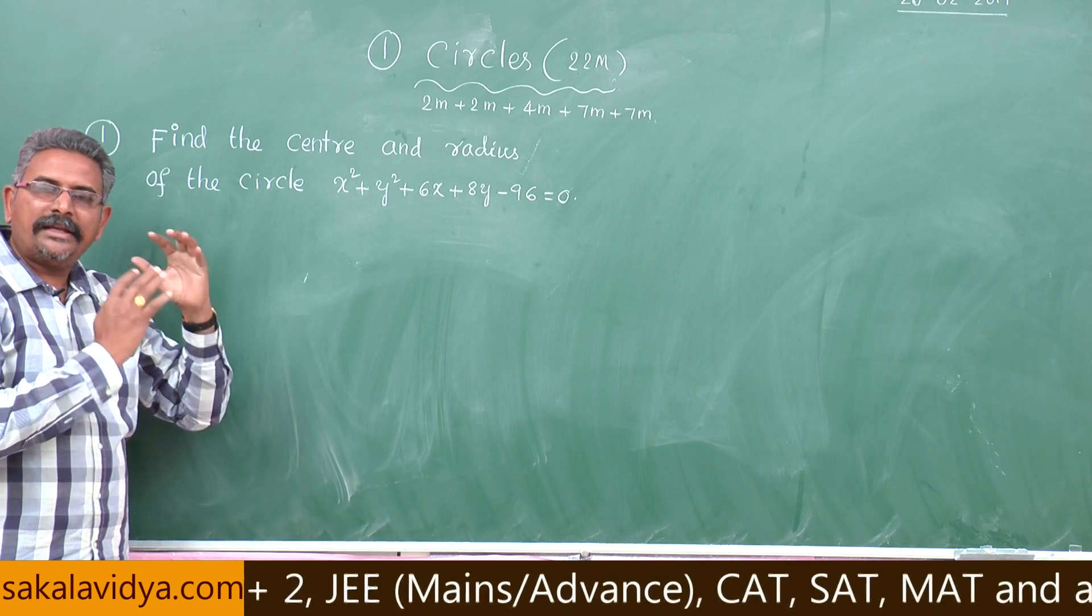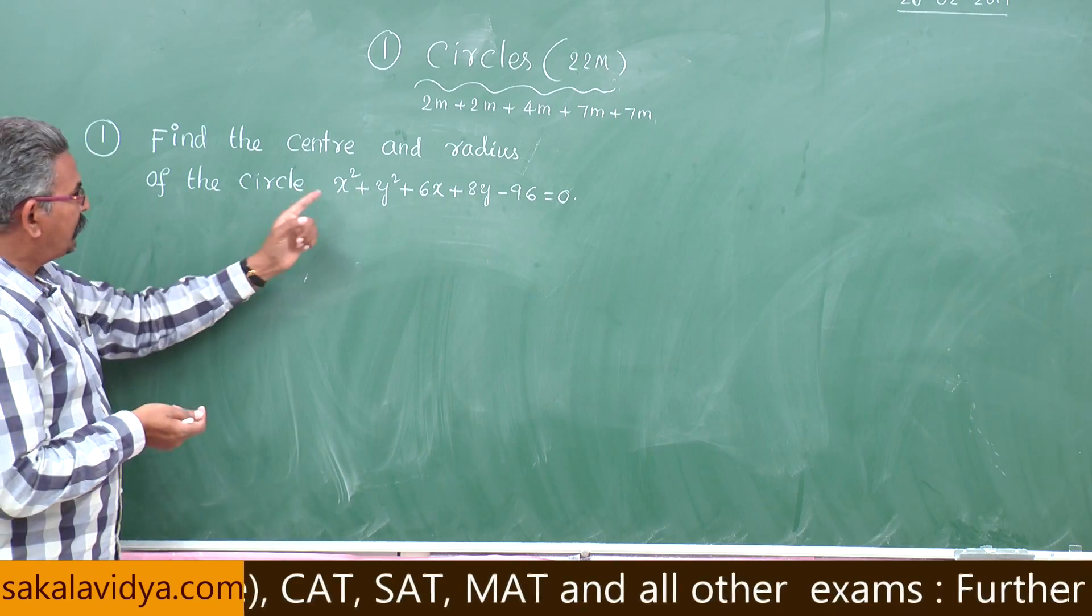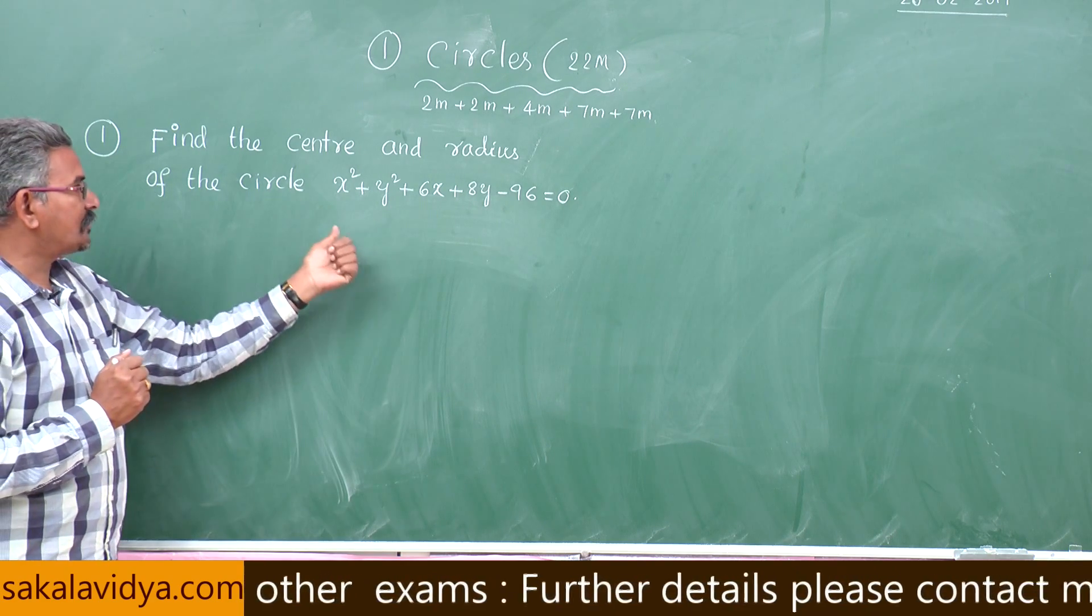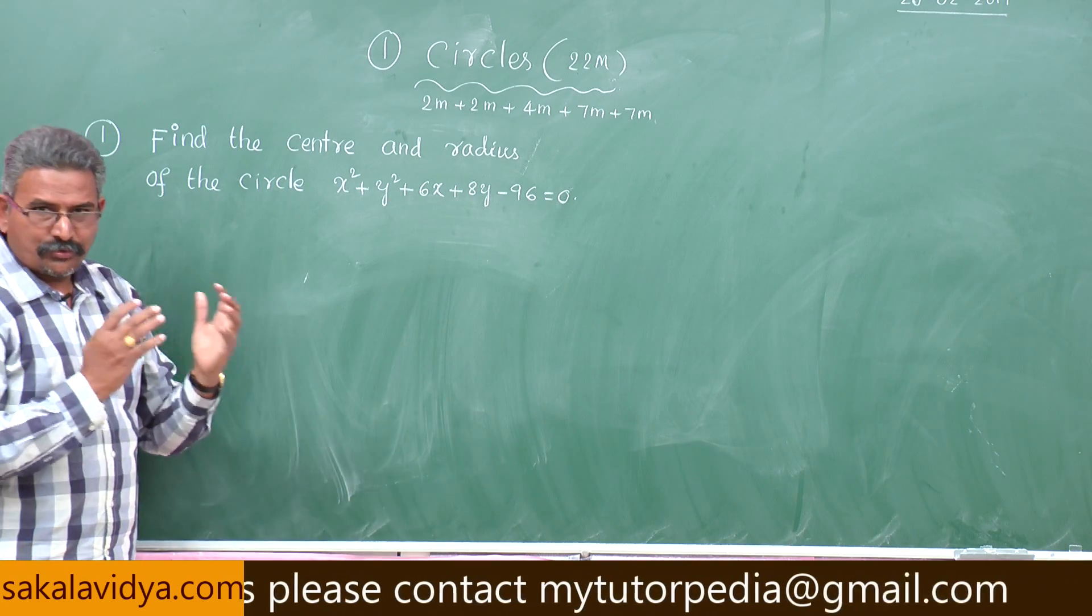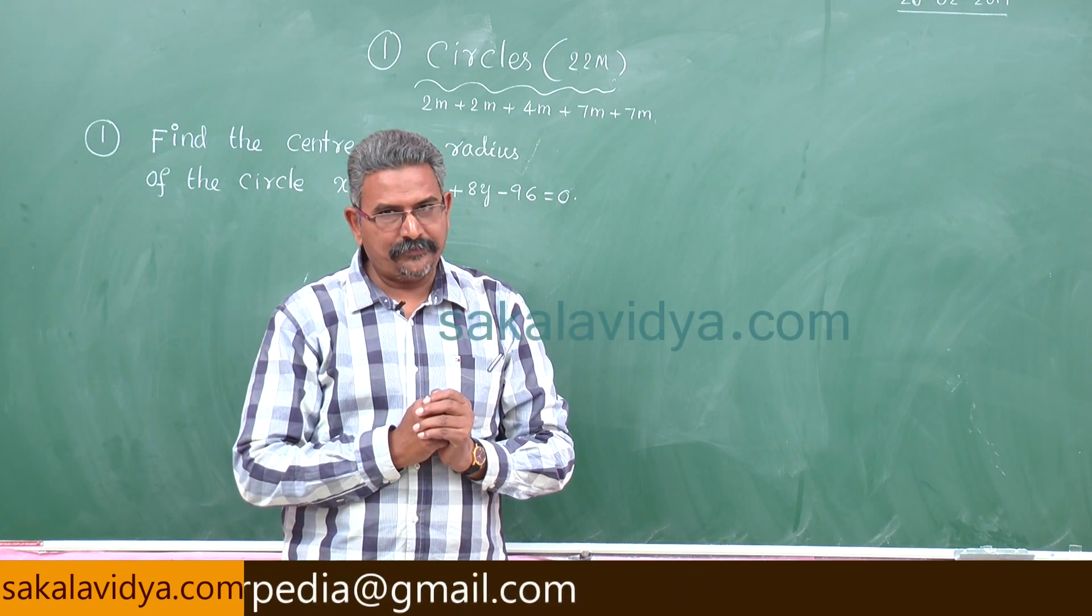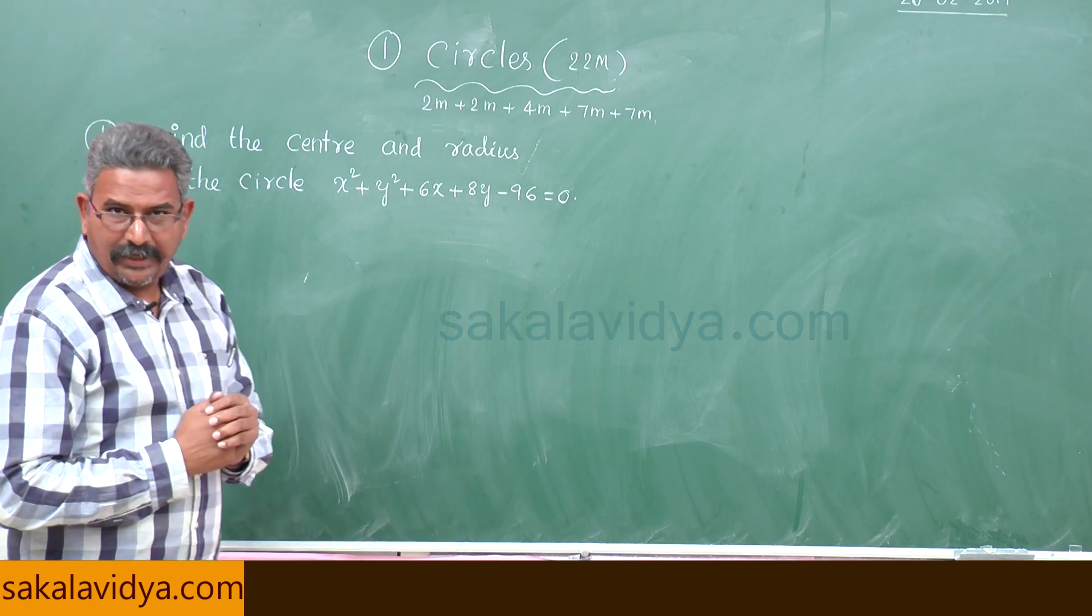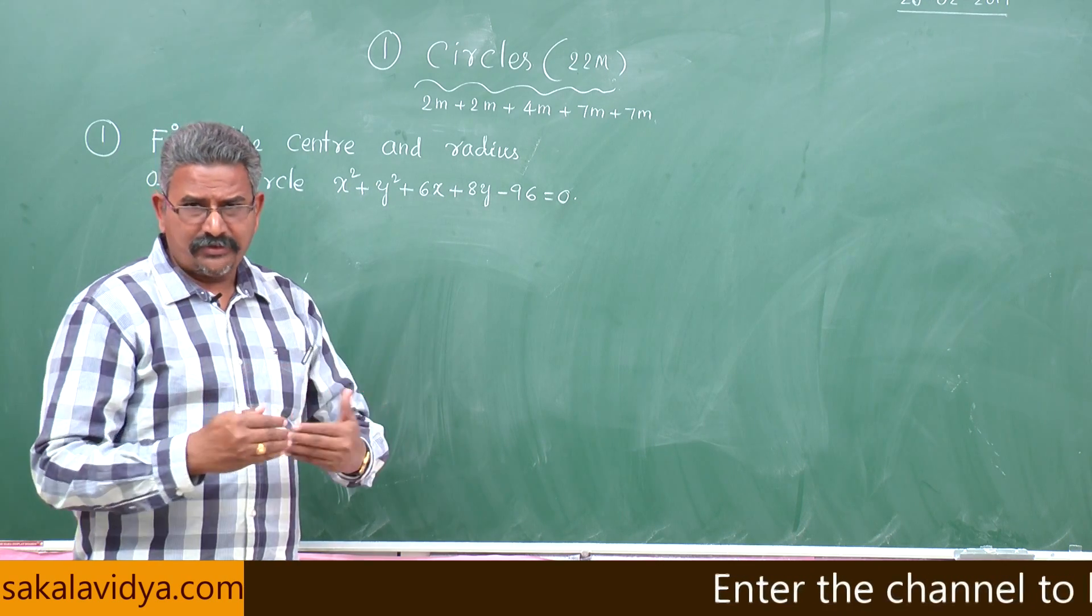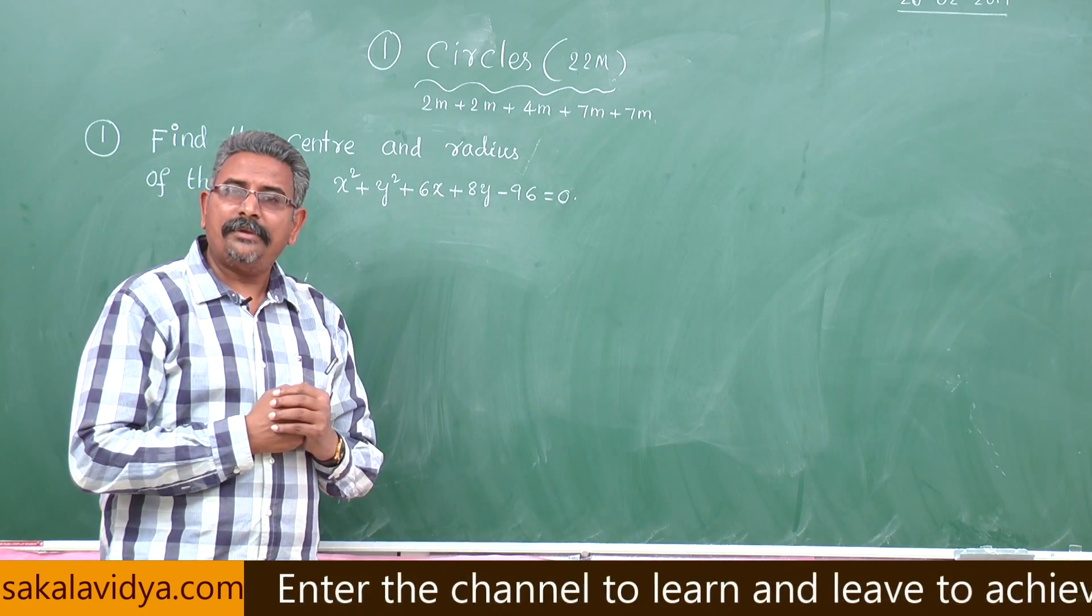First let us make a plan before going to solve this problem. First, given equation should be compared to x² + y² + 2gx + 2fy + c = 0, so that we get the values of g, f, c. Then center is equal to, we have the formula minus g comma minus f. G values, f values can be replaced so that the center of the circle can be evaluated.